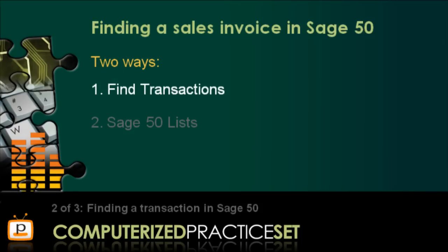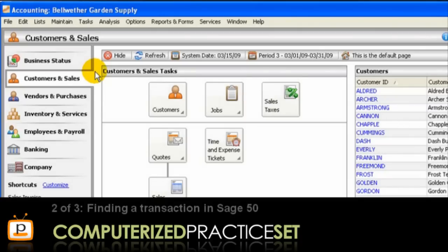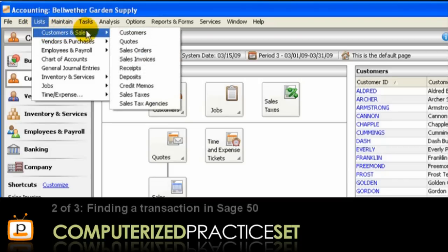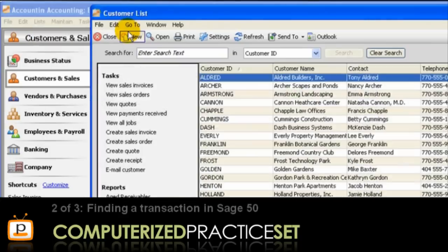Please remember that our current goal is to learn how to find transactions in Sage 50. As an alternate approach to the Find Transactions window, we can use Sage 50 lists. This is the approach that we will now illustrate for the rest of this video. To see the lists available, from the menu bar select Lists and choose the one that is best for you. In this example, I am going to select Customers and Sales, then Customers, to open the Customer List window.